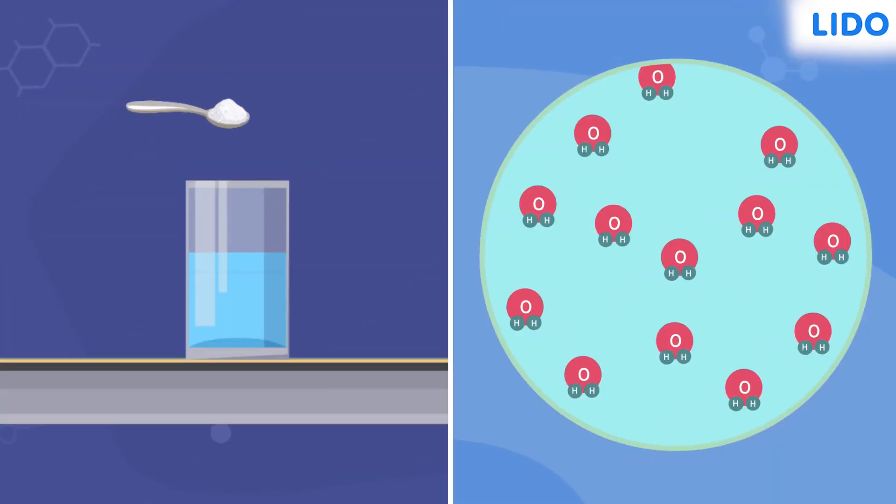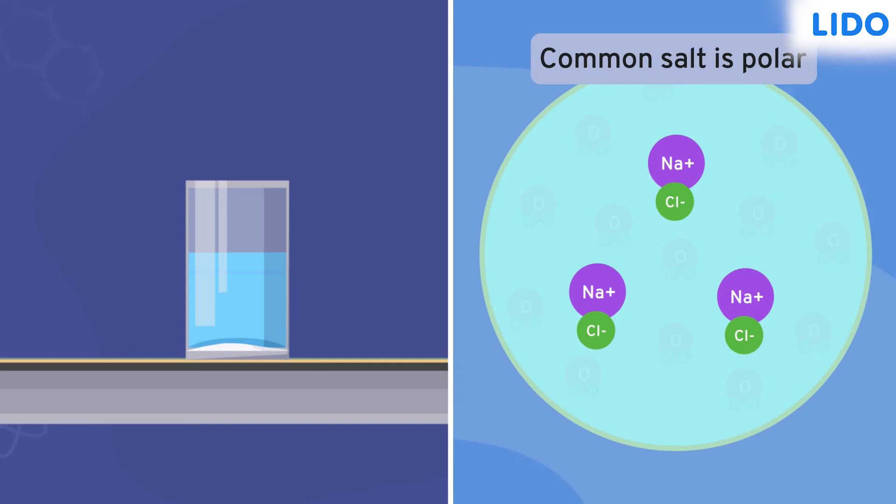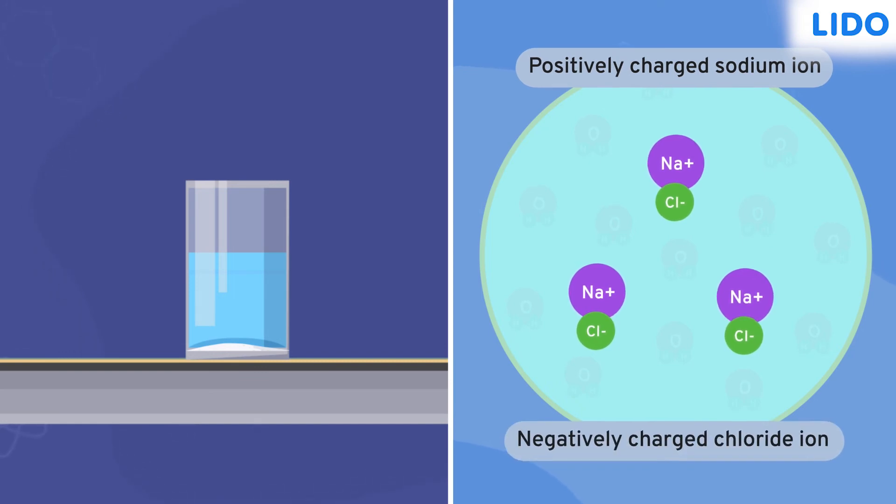Now, suppose we add common salt, or sodium chloride, a solid solute, to water. Even common salt is polar. How? The sodium ion in common salt is positively charged and its chloride ion is negatively charged. And this is when the opposites attract.